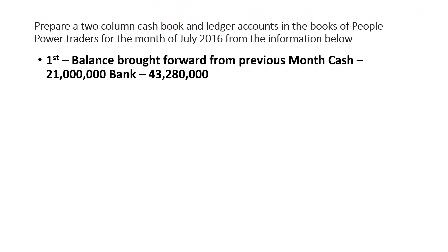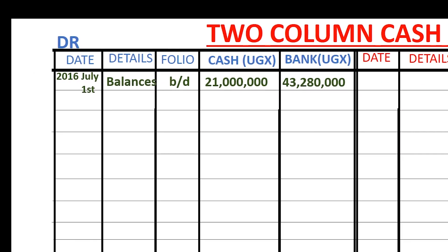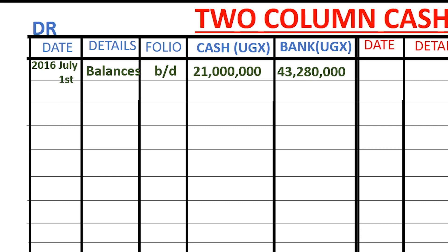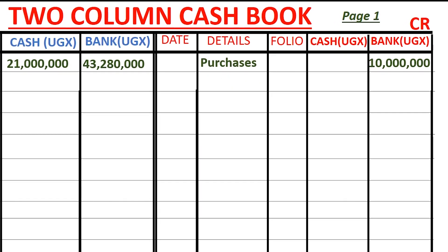Our next transaction on 2nd: bought goods for resale at $10 million paying by check. The items affected are purchases and the bank account. Bank has reduced because we spent $10 million from the bank, so we credit the bank account — crediting the cash book by putting the $10 million in the bank column on the credit side. The other item affected is purchases, and this took place on 2nd of July.